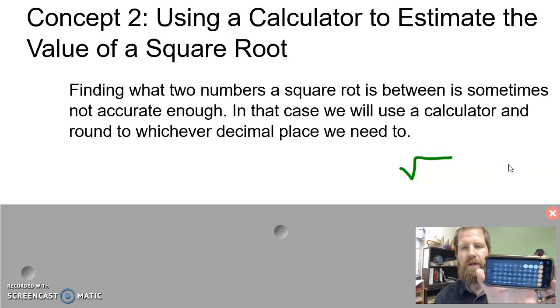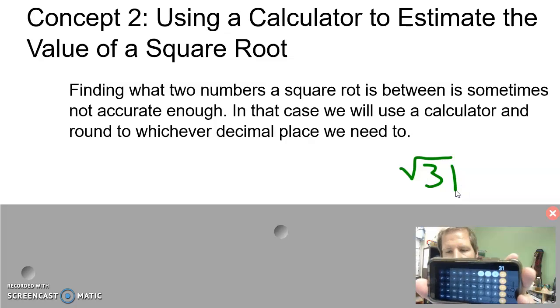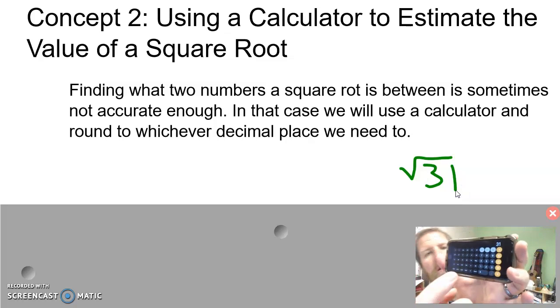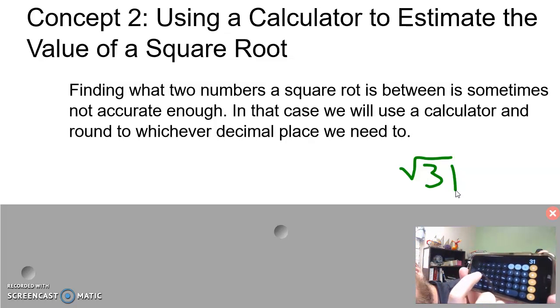This is a little bit different in that you need to enter the value that's going to be inside the square root first. So if I'm doing 31, I need to type in 31, and then the button is going to be right over here and it looks pretty much the same,